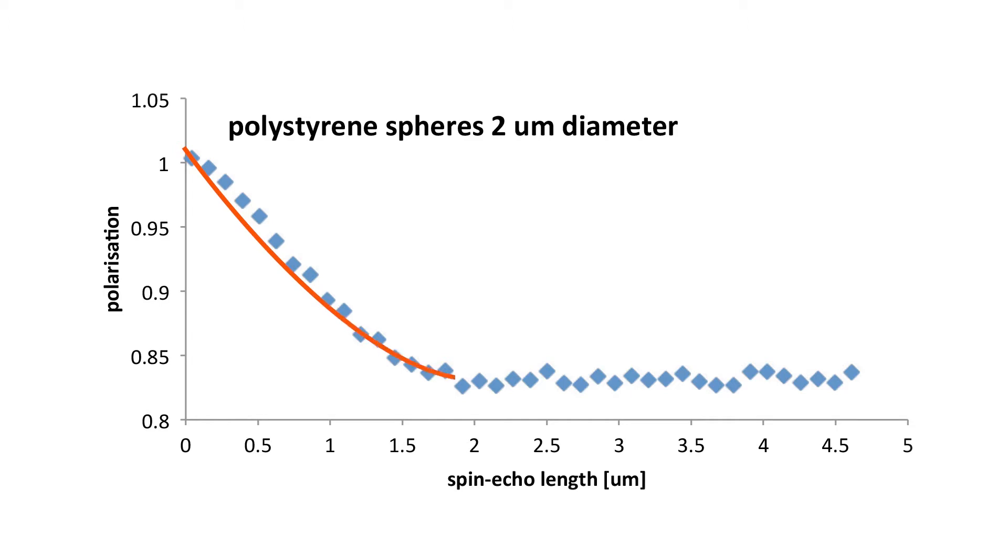What you see is that the polarization starts off at 1 for the short length scales, and then it starts to decrease. At the diameter of the particles of 2 micrometers, it starts to saturate. So this gives you directly an image of the kind of structure that you have in your specimen that you want to study.